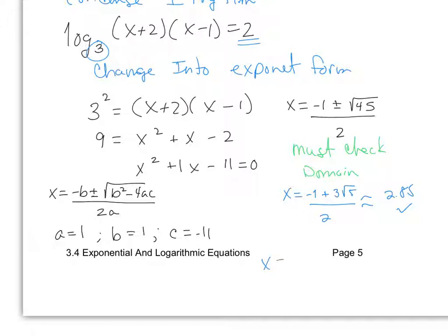However, the next solution is when that is a negative 3 square root of 5 all over 2 as a decimal approximation that is a negative 3.85, and this one is not a possible solution. So I only have one answer for this particular piece.